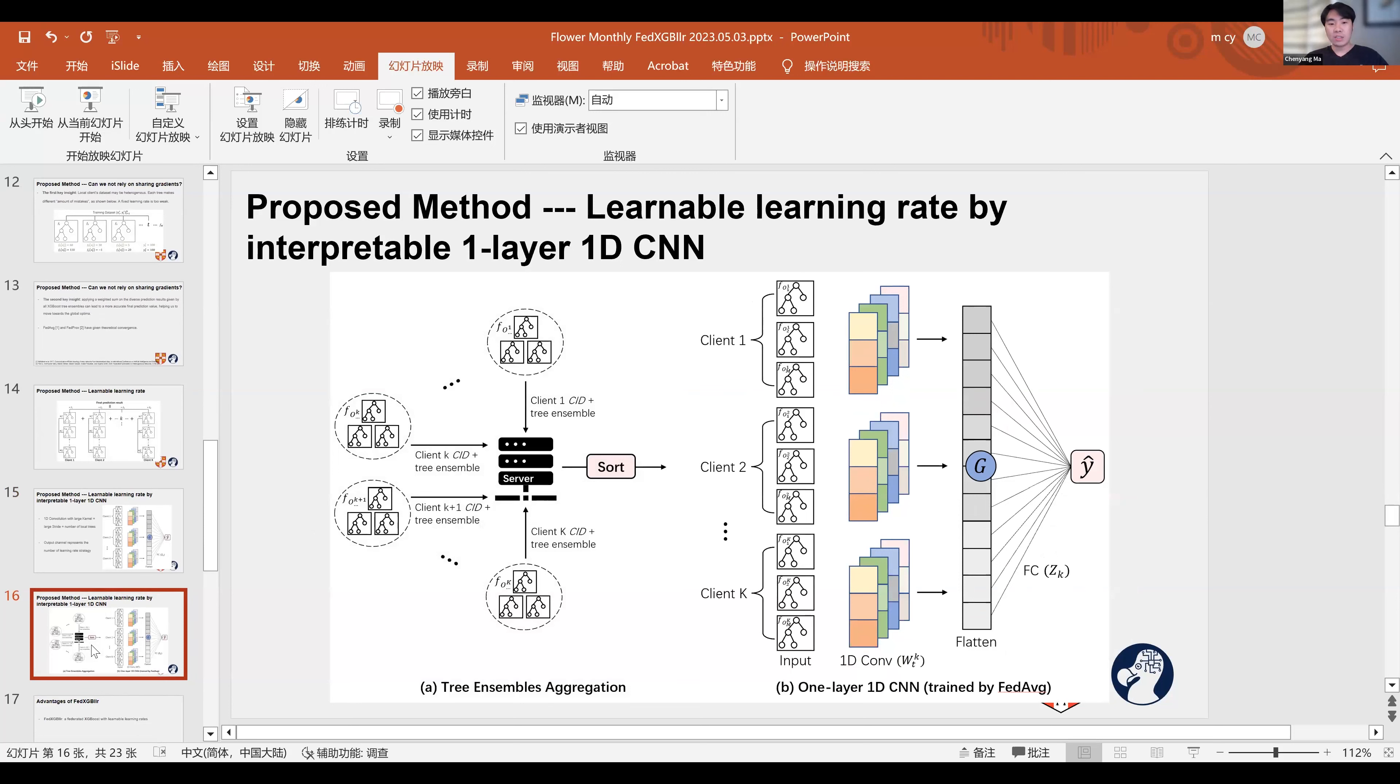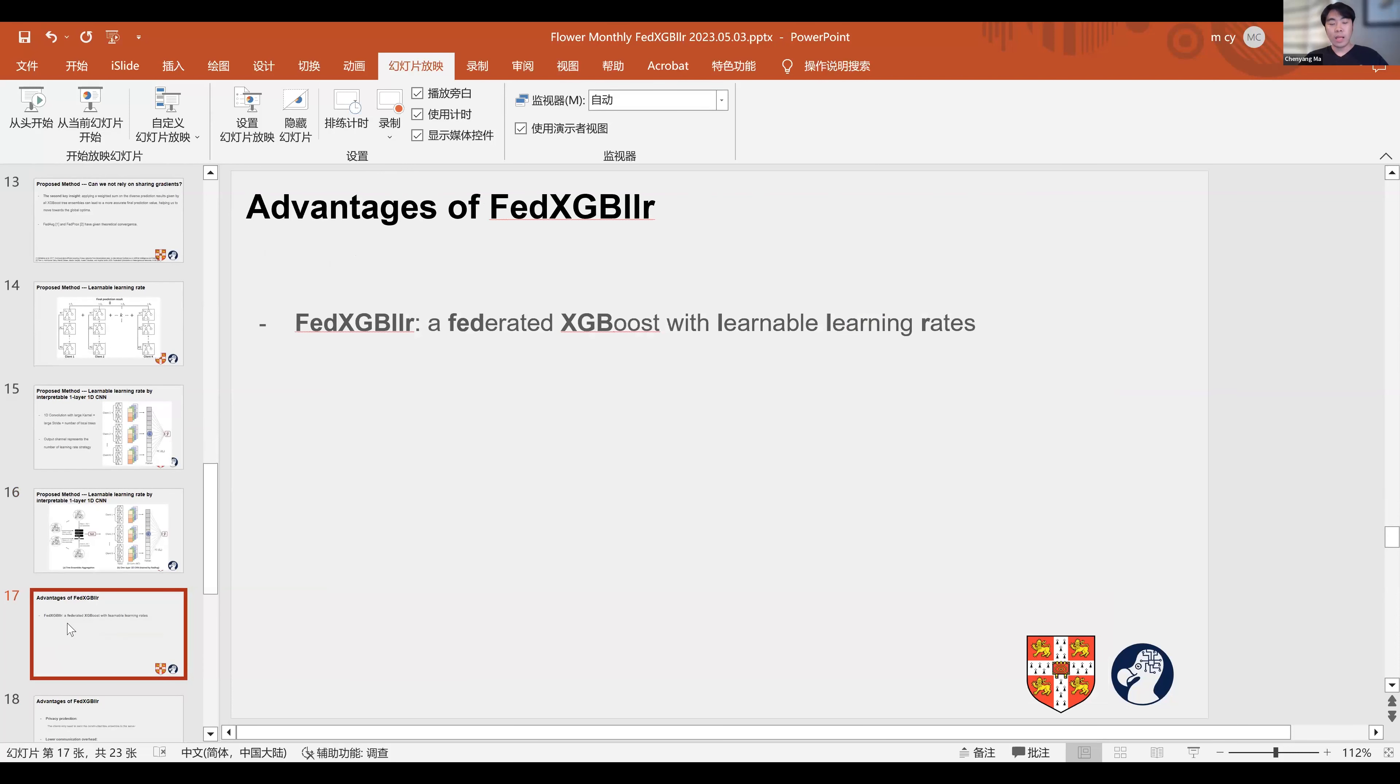Here's our full pipeline. In the left part, each client first trains its local XGBoost tree model. The server then aggregates and initializes the ensemble model. After receiving the aggregated tree ensemble, all clients calculate the prediction outcomes on their local data samples. Then the prediction outcomes are used to train the 1D CNN. It is worth noting that the clients only need to build the XGBoost tree ensemble at round one. The aggregated tree ensemble is fixed after round one. For the federated training of the 1D CNN, we use federated averaging, which is the most basic and standard protocol.